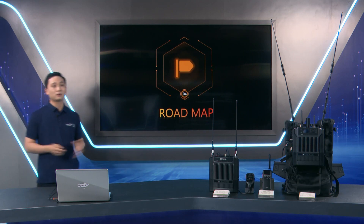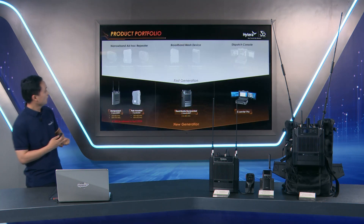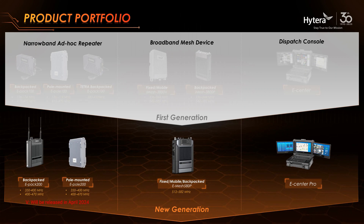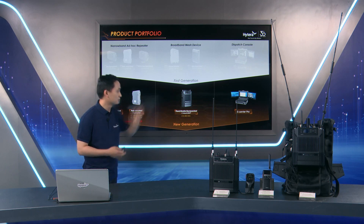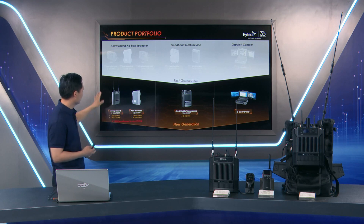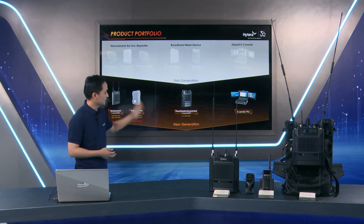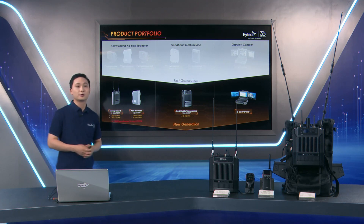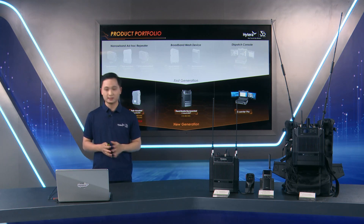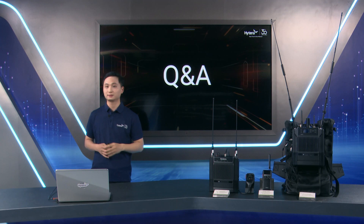Finally, the last part is the product roadmap. For the overseas market, we recommend the second generation: EPEC 200, EPO 200, E-Mesh, and eCenter Pro. The VHF frequency band for EPEC and EPO will be released in April next year. The E-Mesh and eCenter Pro are ready now. Thank you very much for listening. If you have any questions, please feel free to leave your message online and we will reply.